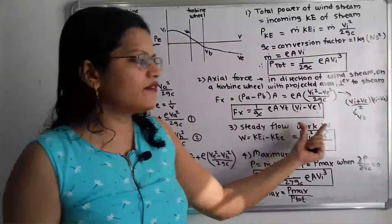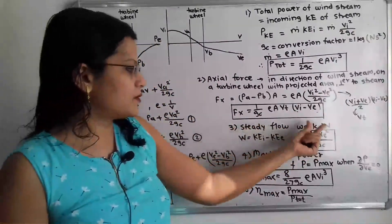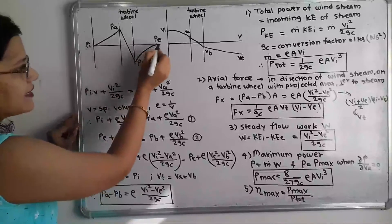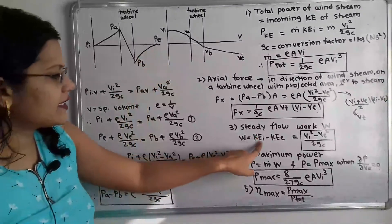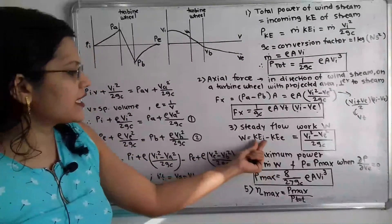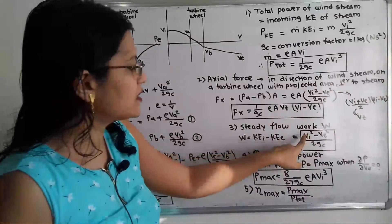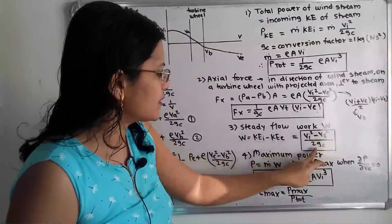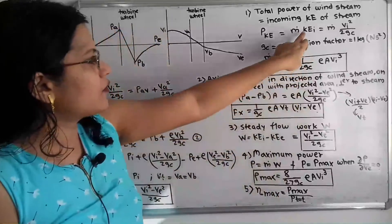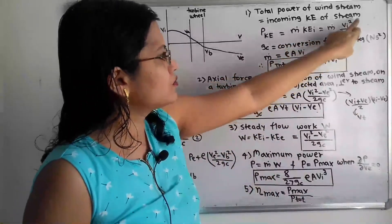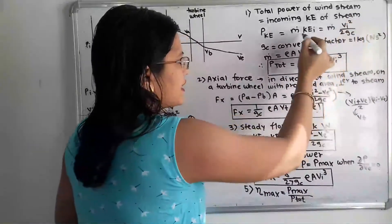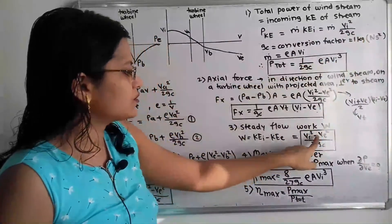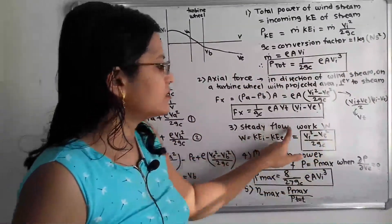We now move to the steady flow work W. This is the difference between the incoming and exit kinetic energies: W = (vi² − ve²) / (2gc). This formula represents the work extracted from the wind per unit mass.